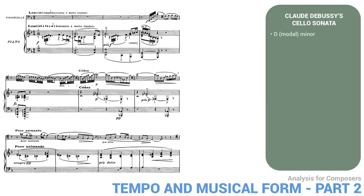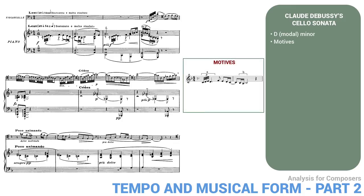The movement starts in D modal minor, with a piano solo that presents a couple of important motives — we'll call them A and B. The first one is a quick little turn around a single note, and the second one starts with a held note followed by a 16th note neighbor figure. The starting tempo is slow, the character very assertive.